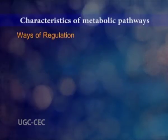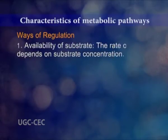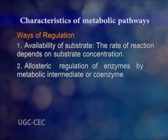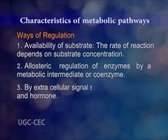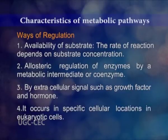Regulation occurs in the following different ways. Number one, availability of the substrate — the rate of reaction depends on substrate concentration. Number two, allosteric regulation of enzymes by a metabolic intermediate or coenzyme. Number three, by extracellular signals such as growth factor and hormone. Number four, it occurs in specific cellular locations in eukaryotic cells.